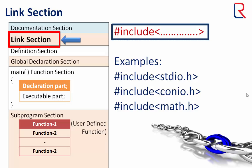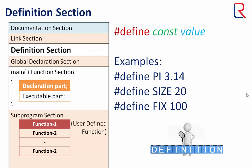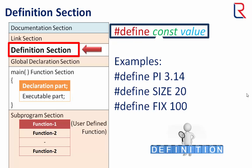Now see the definition section. This defines all symbolic constants. We use hash defined directive to define constants, and the syntax is hash defined constant and value of that constant. Here are some examples.